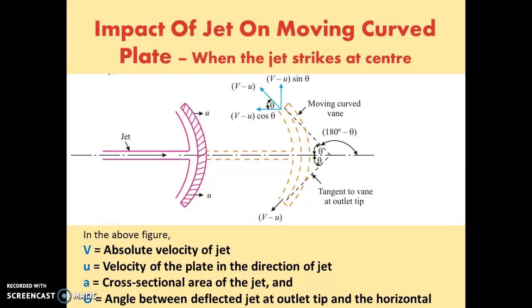Good morning. In the last lecture we saw the impact of a jet on flat inclined plates. In this lecture we are going to see the impact of a jet on a moving curved plate when the jet strikes at the center. This is a jet which comes out of a nozzle and strikes a curved plate. The velocity of the jet is v and the velocity of the plate is u.